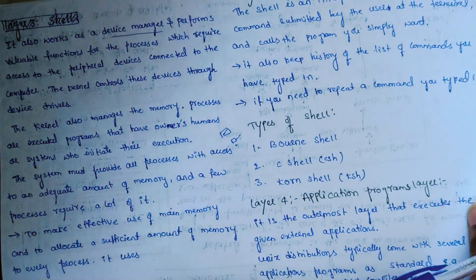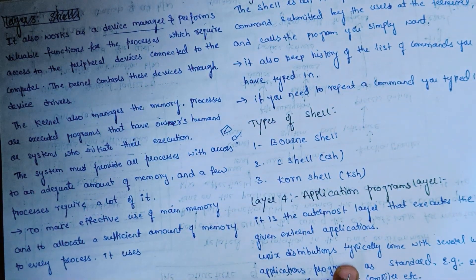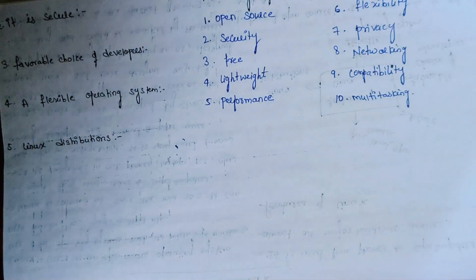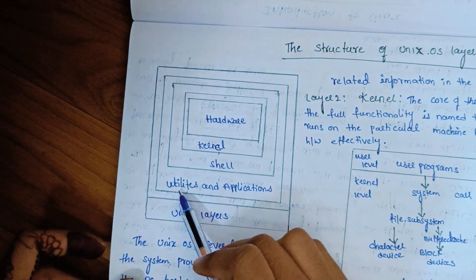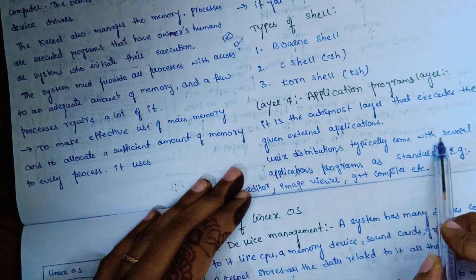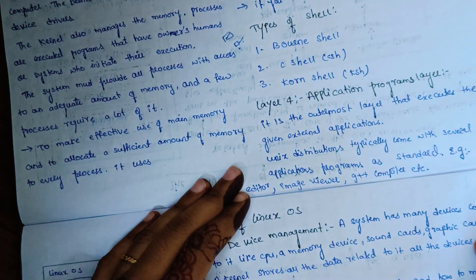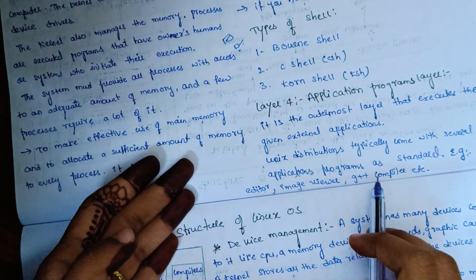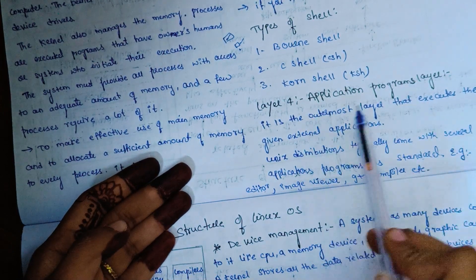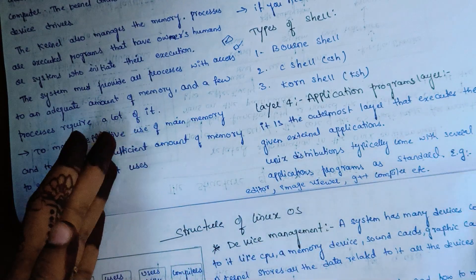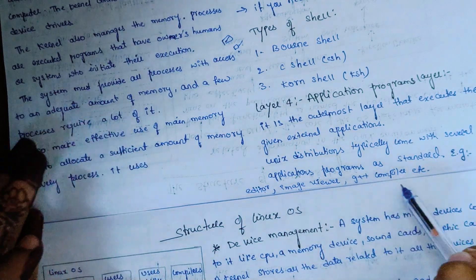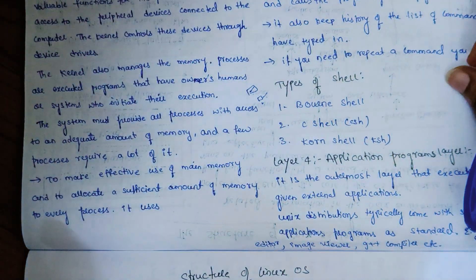Next, coming to the application programs layer — the last and final layer. This is the outermost layer of the Unix structure, which includes utilities and applications. Useful application programs include standard examples such as games, the Emacs editor, ImageMagick, the g++ compiler, and others. In a Unix distribution, the application layer in the outermost layer typically comes with several useful applications. These are the structures of the Unix operating system.